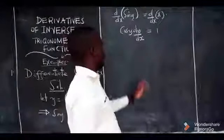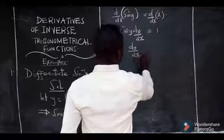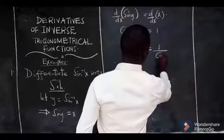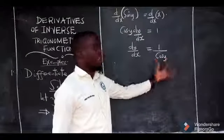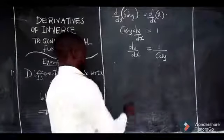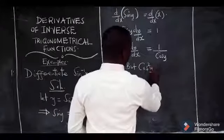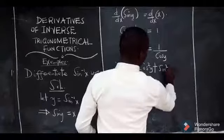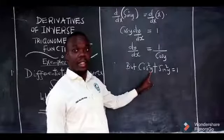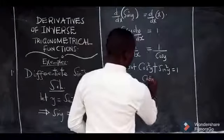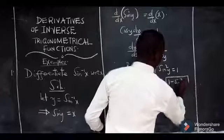Now, from this level, we are basically going to make dy/dx the subject, so that we have dy/dx as 1 over cos of y. When you get back to this, we need to express cos of y in terms of x. We can begin from the first identity of trigonometry, where we know that cos²(y) plus sin²(y) equals 1. Then when I make cos(y) the subject, it becomes cos(y) = √(1 − sin²(y)).